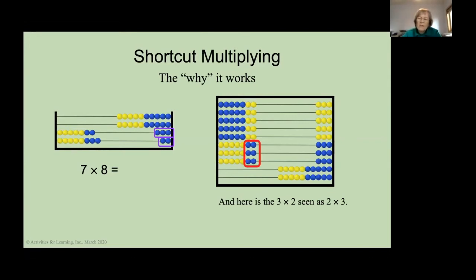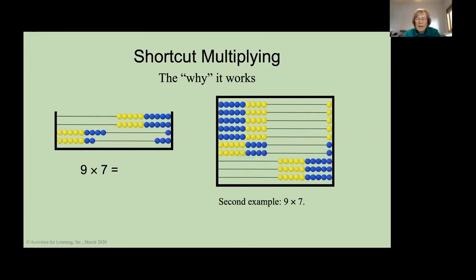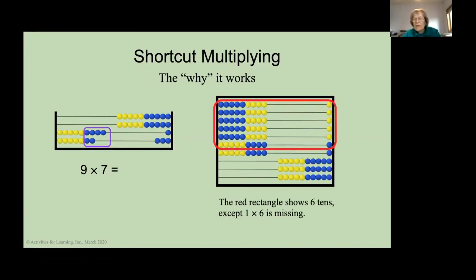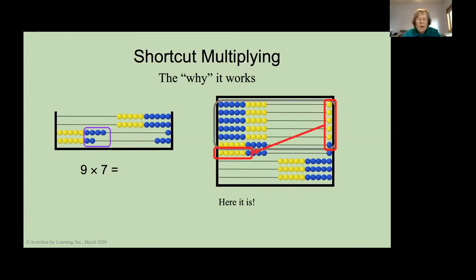You could actually, if you wanted to, take these up here and actually move them over here. But I think it's easier to see it this way. Let's try our other example. 9 times 7. The number of tens is 60. But again, we've got those. The 1 times 6 is missing. But it's, lo and behold, right over there. And then, our ones is 1 times 3. And there it is on the bottom wire. And I always said I could prove this algebraically. It's quite easy if you know elementary algebra. But now, you can see it physically, why it works.